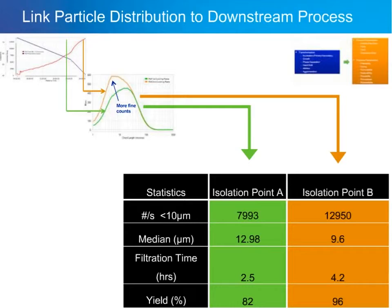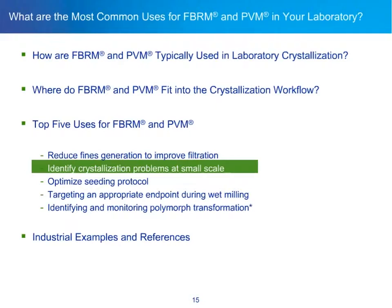A target particle distribution can be achieved by changing input properties and process parameters to give the best downstream process — in this case the filtration rate. There will also be a significant yield difference between the two isolation points since we haven't cooled all the way down the solubility curve.